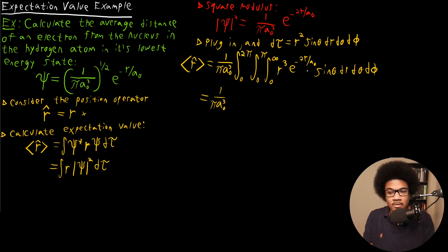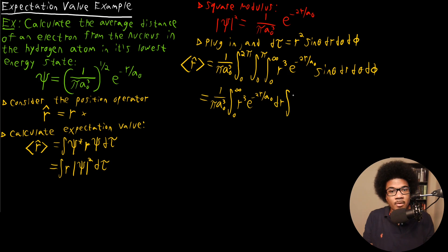These triple integrals are fairly unintimidating — just distribute everything belonging to each variable and evaluate those single integrals separately, then multiply the results together. We have 1 over Pi A-naught cubed out front. For the R integral: from 0 to infinity of R-cubed times e to the negative 2R over A-naught dr. For theta: from 0 to pi of sine-theta d-theta. For phi: from 0 to 2-pi d-phi.